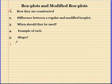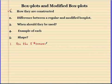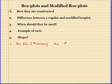To construct a box plot or a modified box plot, we use the five number summary. If you have no idea what the five number summary is, make sure you go back and watch the previous video on it. The five number summary has a minimum, a Q1, the median, a Q3, and a max.